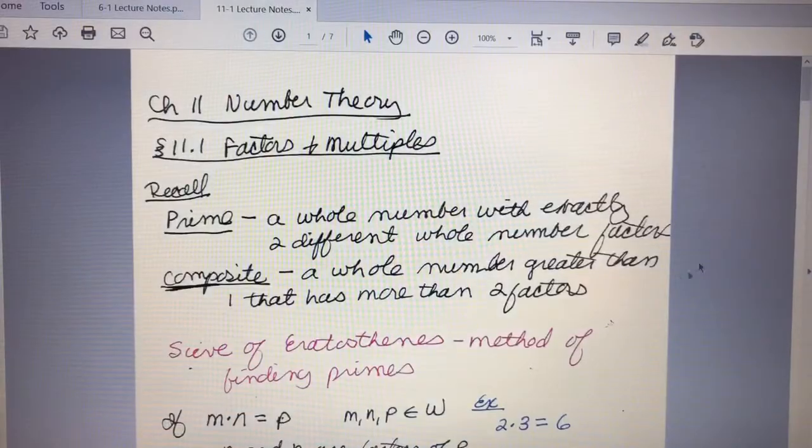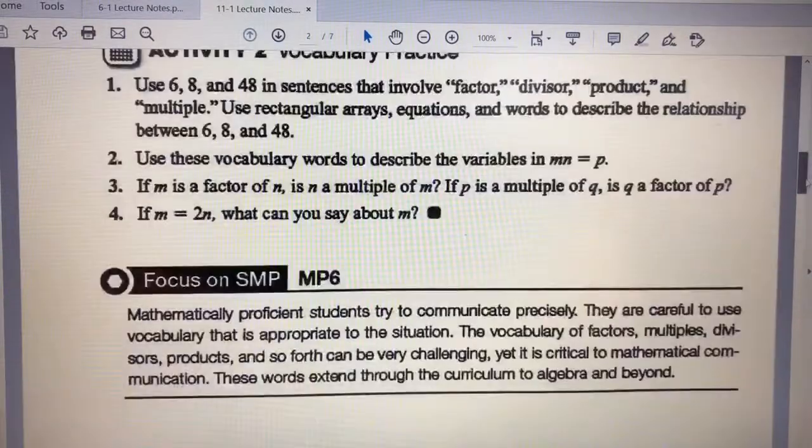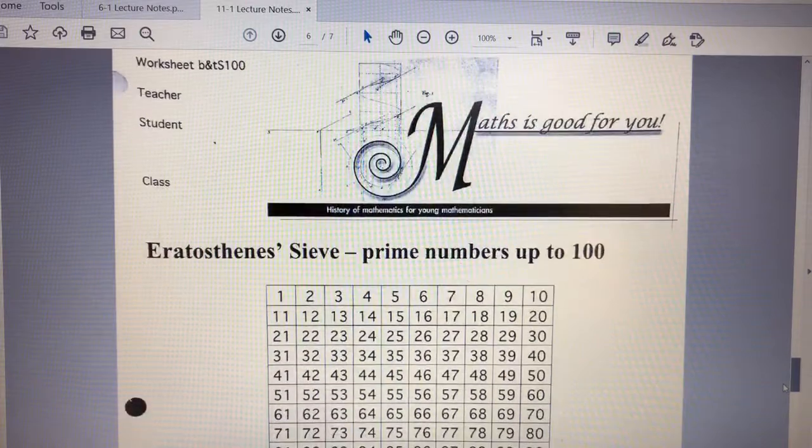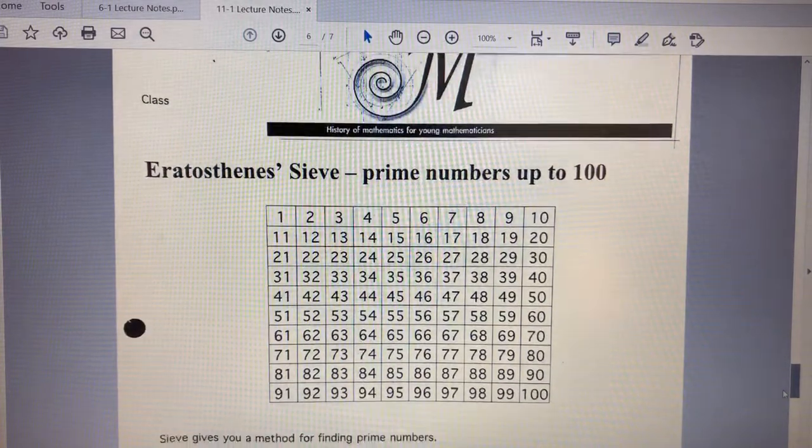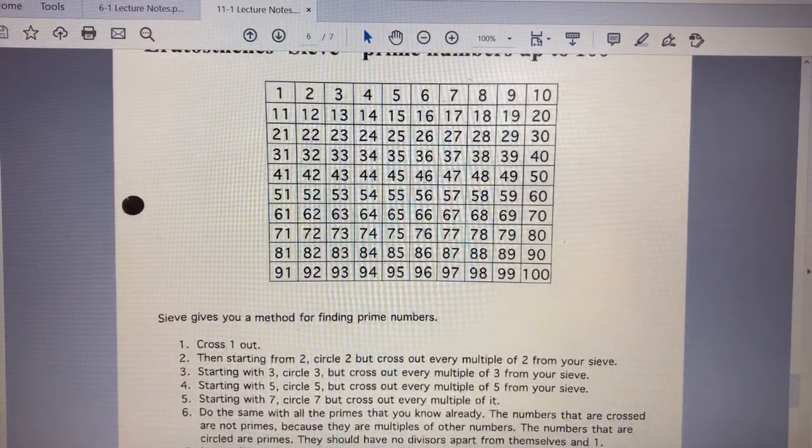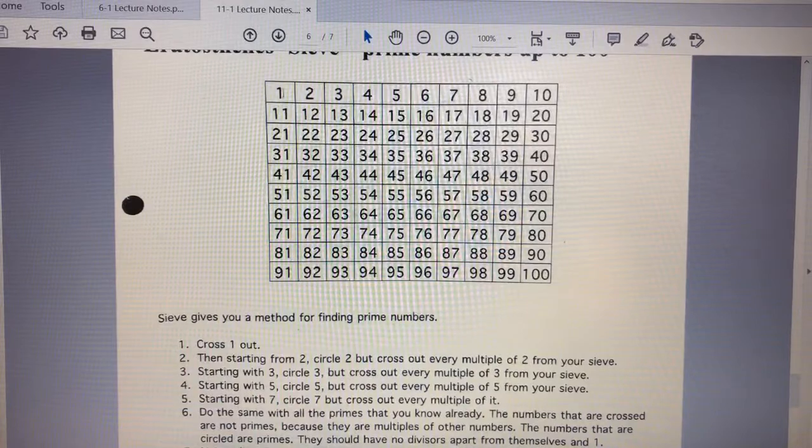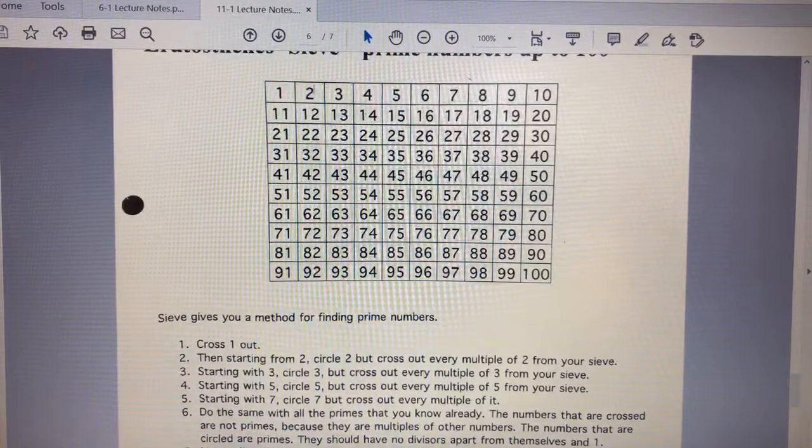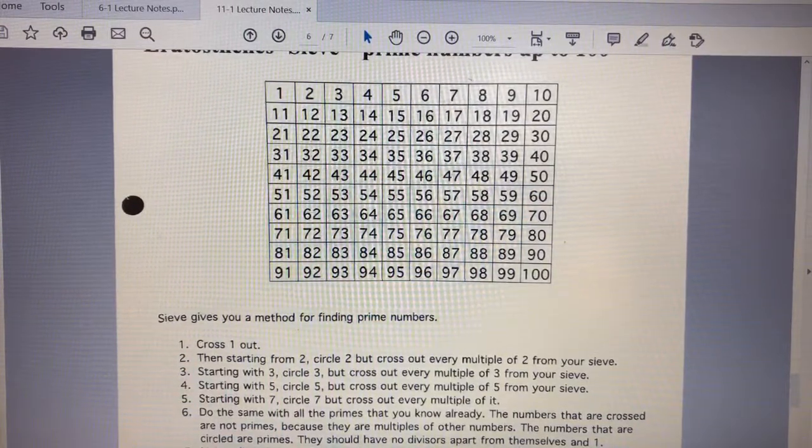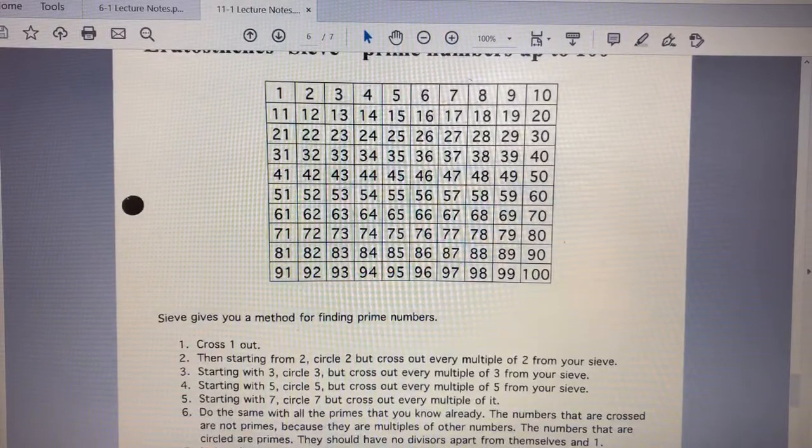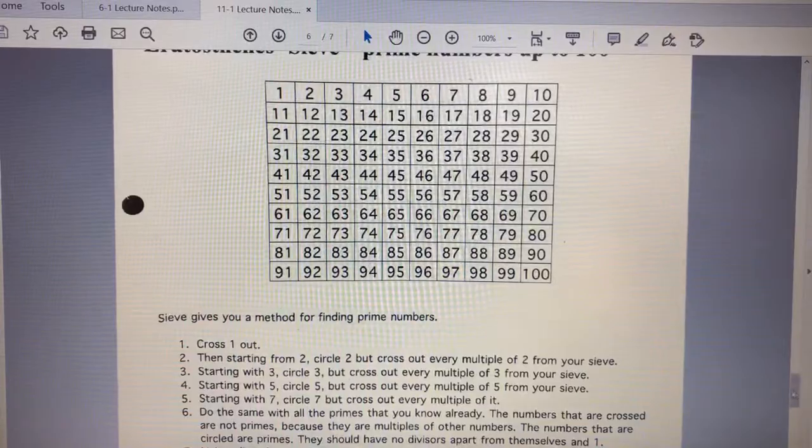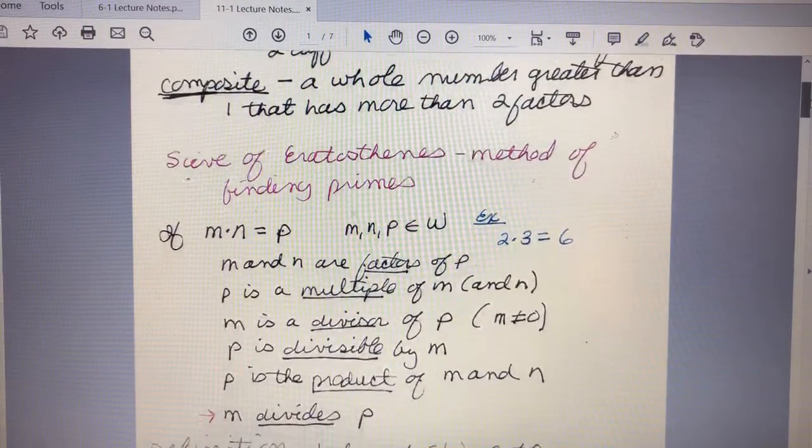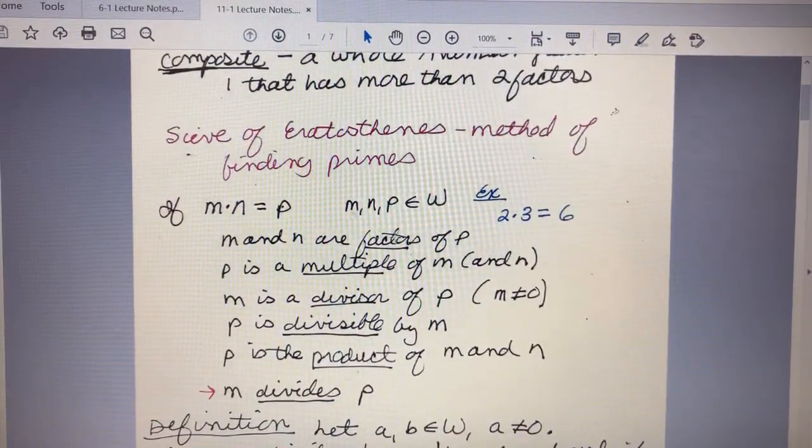I've also included it in the lecture notes toward the back here. This is a handout where you can go through that same process by hand. You start by crossing 1 out—we couldn't do that on the applet because 1 would have wiped out everything. Then we go with 2, circle 2 and cross out every multiple of 2, then go to 3, circle that, etc. That's kind of cool, and if you wanted to work through that, you could.